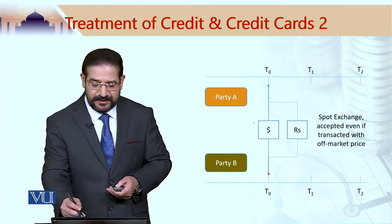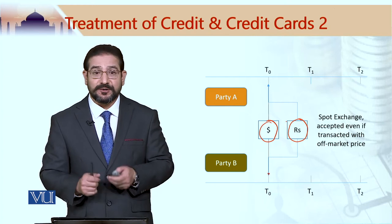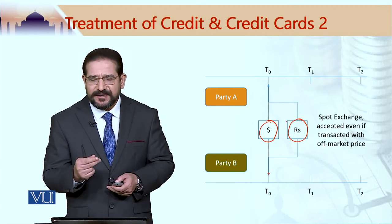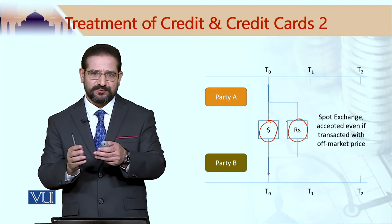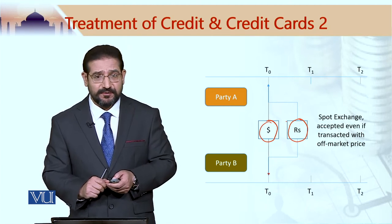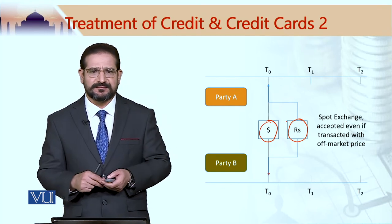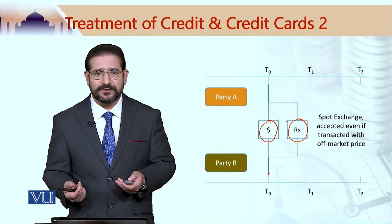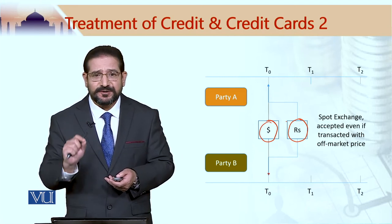A spot exchange is where a certain amount of dollars is exchanged for a certain amount of rupees on spot. When it comes to spot currency exchange, Islam is slightly relaxed. If the exchange rate today is, for example, one dollar equal to 175 rupees, it is permitted to go for an exchange rate different from the market rate on spot. So if I want to sell one dollar for 200 rupees and that person is willing to pay 200 rupees, this is acceptable. However, the transaction must take place on spot.